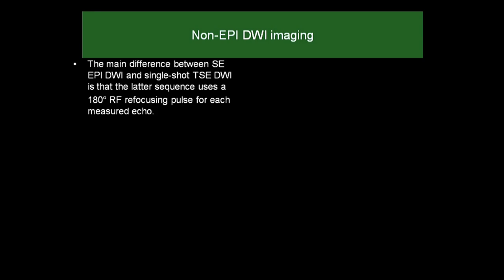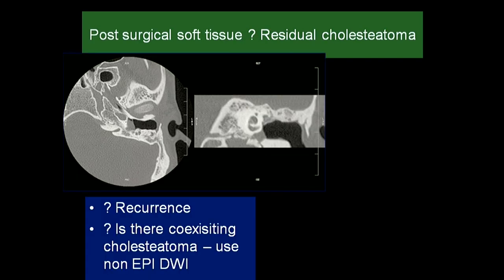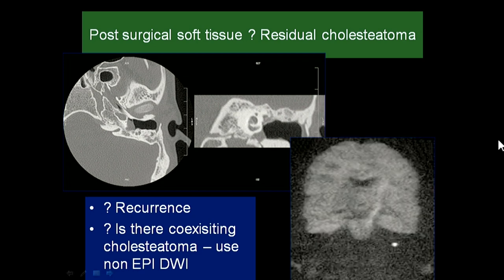Non-EPI diffusion-weighted imaging (DWI) has been promoted as a technique to detect cholesteatoma when uncertain. This is called non-EPI-DWI — Turbo Spin Echo DWI in Siemens, PROPELLER in GE, and there are published papers on this. Here is a post-surgical patient with residual soft tissue where it is difficult to determine if cholesteatoma remains. On non-EPI-DWI, diffusion restriction is seen, giving confidence to confirm residual cholesteatoma.